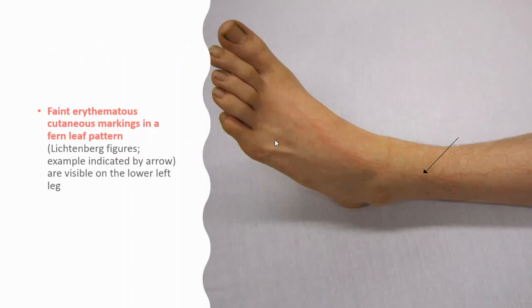And this is another picture showing faint erythematous cutaneous markings in a ferning pattern. And this is called Lichtenberg figures.